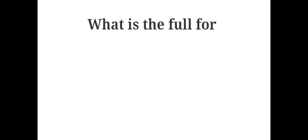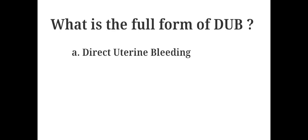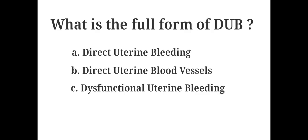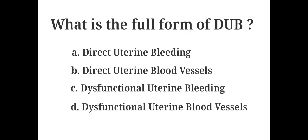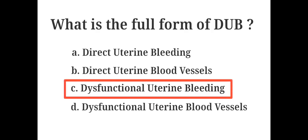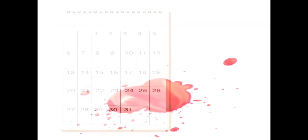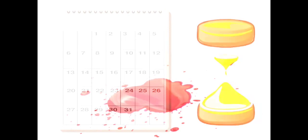What is the full form of DUB? A. Direct uterine bleeding, B. Direct uterine blood vessels, C. Dysfunctional uterine bleeding, D. Dysfunctional uterine blood vessels. The answer is C. Dysfunctional uterine bleeding. DUB is also called abnormal uterine bleeding. Irregular bleeding can come at different times from month to month and last for different lengths of time. The blood flow may vary from light to extremely heavy with large clots, and may be associated with uterine cramps.